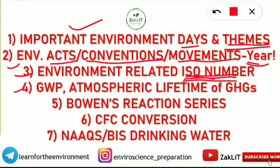The fourth topic is Global Warming Potential and the Atmospheric Lifetime of Greenhouse Gases. Questions can be asked asking you to arrange these in increasing or decreasing order, so in some twisted form these things will definitely appear — Global Warming Potential and Atmospheric Lifetime of Greenhouse Gases.